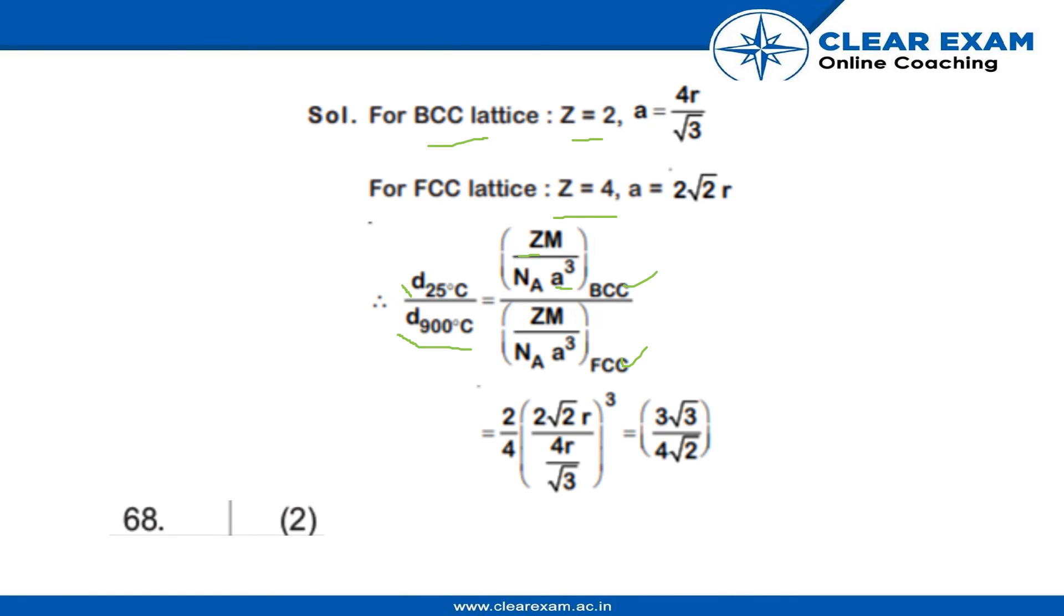from here we can directly cancel the NA along with the molar mass because for the same compound it's the same. So if we do just Z by A cubed,